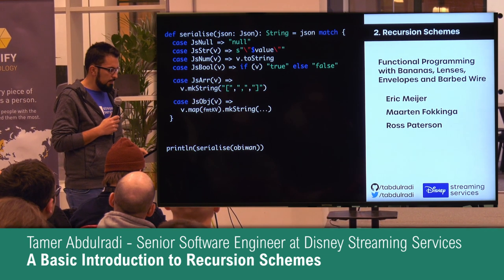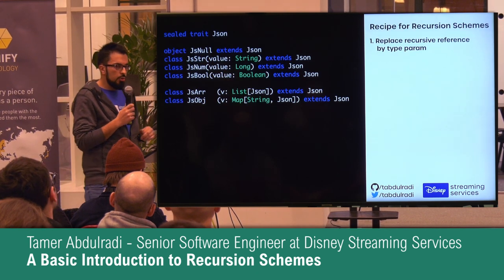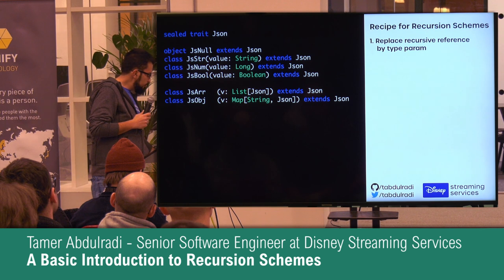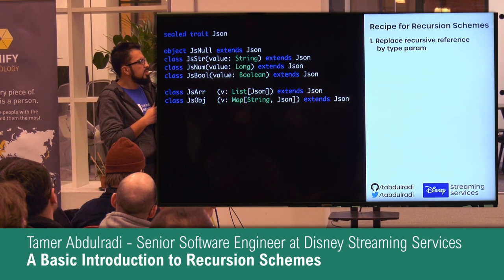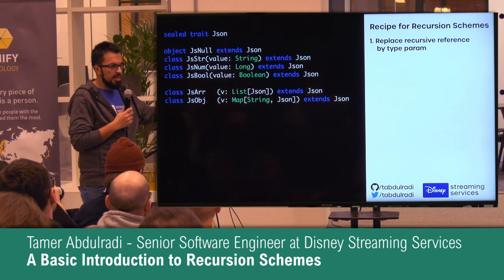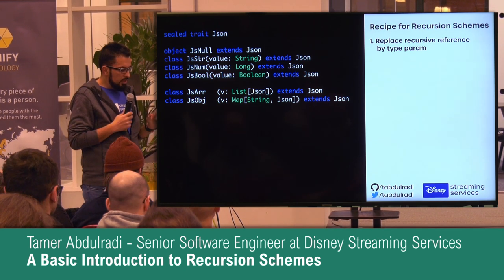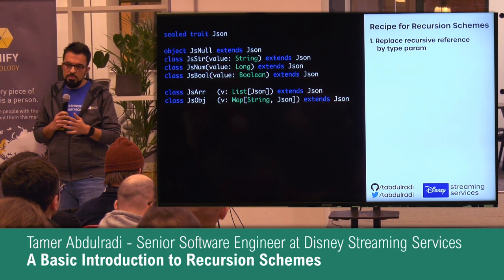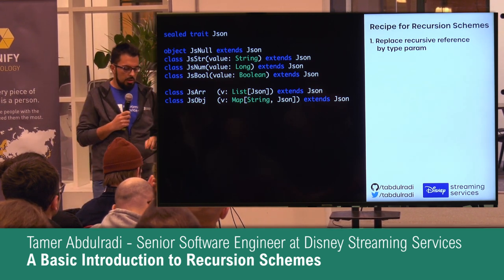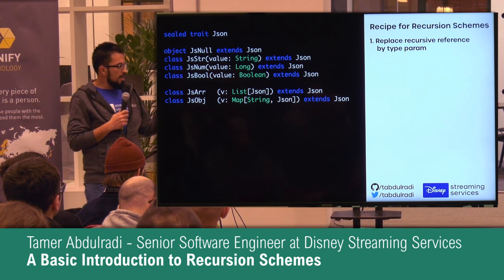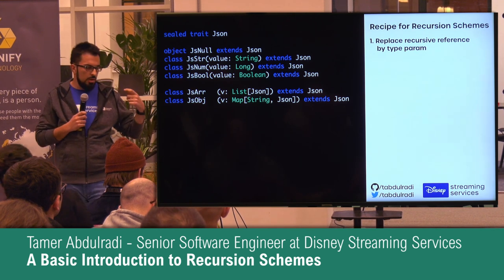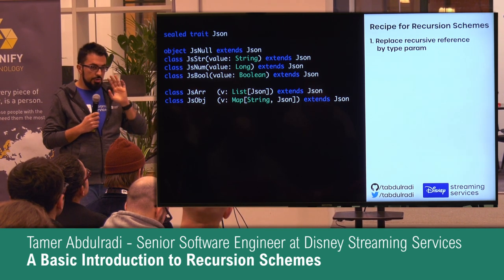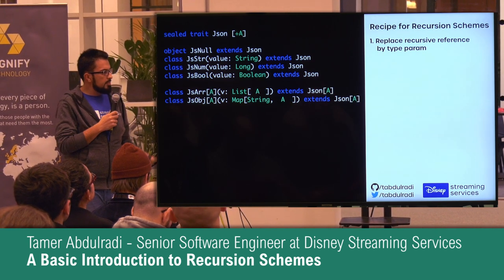This is the same JSON data structure — I only removed some things, like the final case, just to make more space in the slides, but it's more or less the exact same data structure. So let's start the transformation step by step. Number one: locate where the recursion is in your data structure — where you recursively refer to JSON. Here we have JSArray and JSObject — they recursively use JSON, they are defined in a recursive manner. First step: remove the reference to JSON and put instead a type parameter.